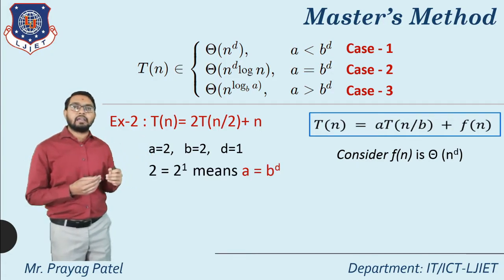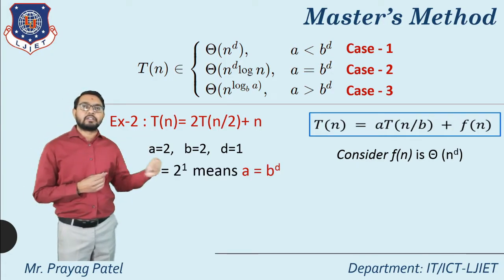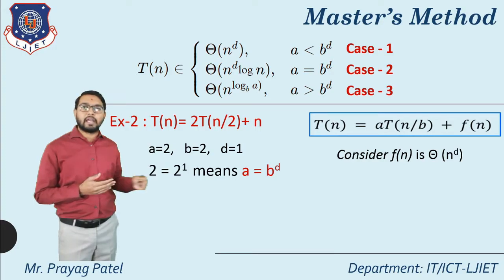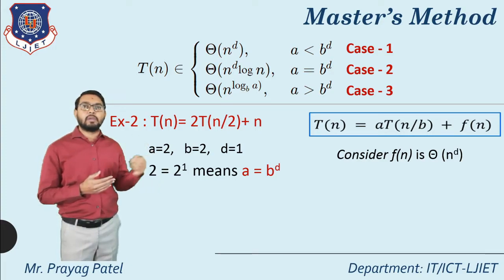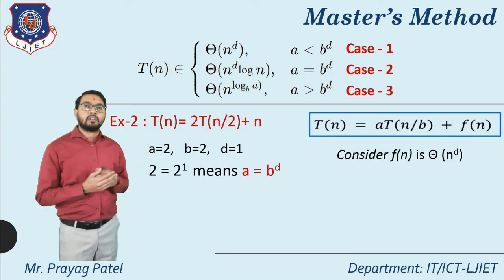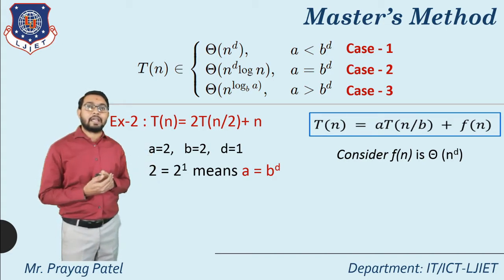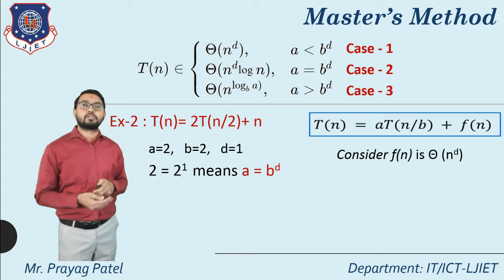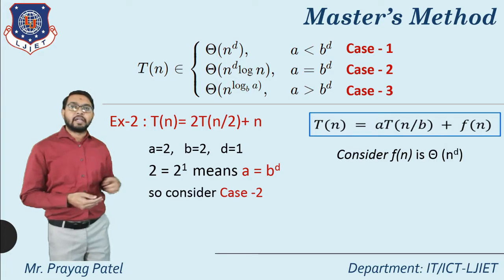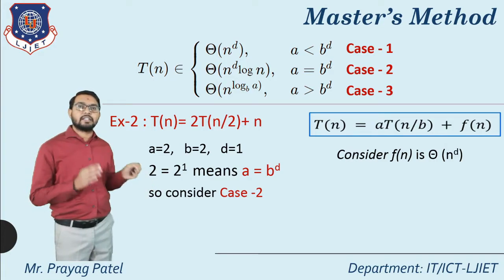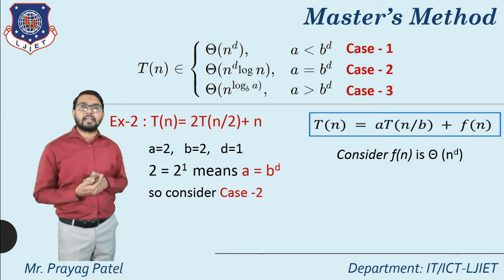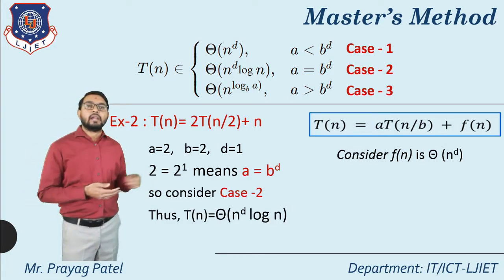Here 2 = 2, so the condition a = b^d is satisfied. That is why we consider case 2.